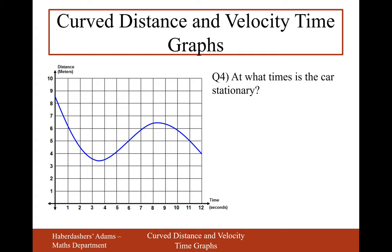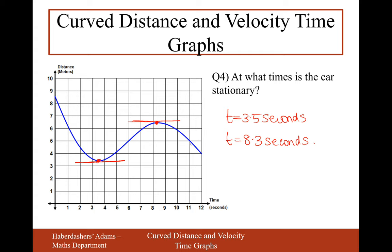A problem-solving question: at what times is the car stationary? On a distance time graph, the car is stationary when the gradient is flat — when the graph is neither increasing nor decreasing. That happens at two points: when t equals 3.5 seconds, and when it's about 8.3 seconds. On a distance time graph, if an object is stationary, it means the gradient is flat at those points.